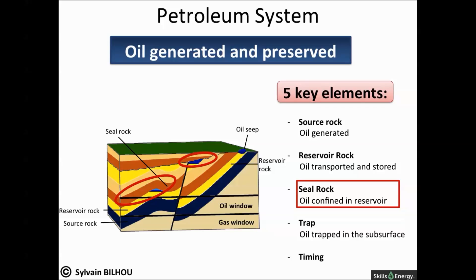Now you know more about the source rock and the reservoir, let's talk about the seal. The seal is a fundamental part of the trap that prevents hydrocarbon from further upward migration. In order to keep the hydrocarbon confined within the carrier system, an impervious sedimentary bed is needed overlying the drains.